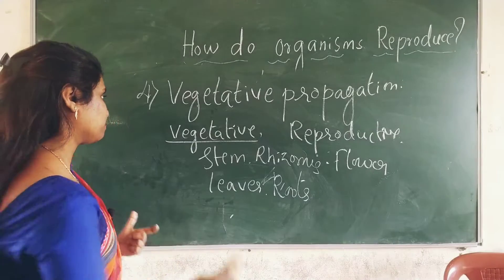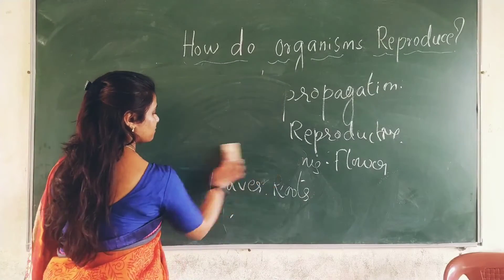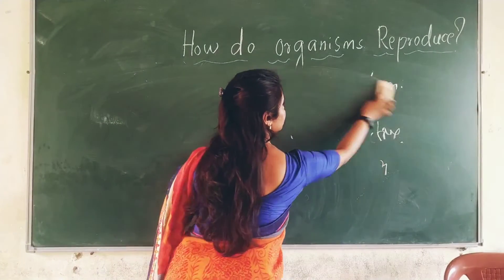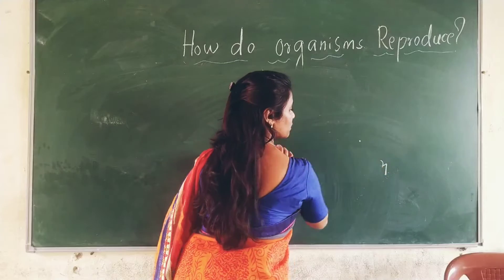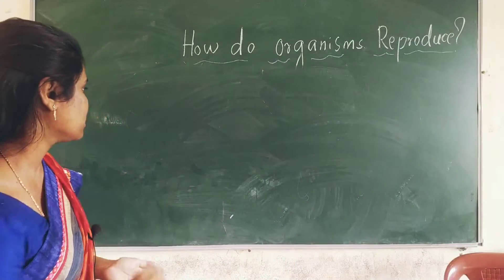Give an example of a plant which grows through rhizomes and one which grows through roots and comment below. The next type is spore formation — the sixth type of asexual reproduction.